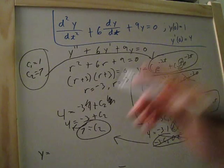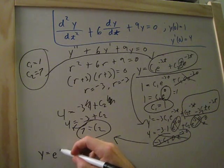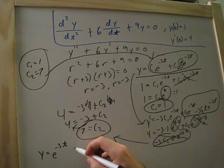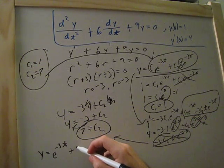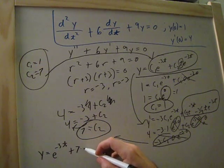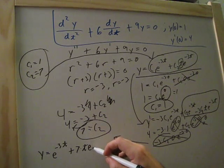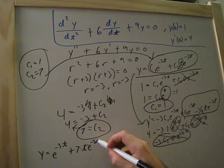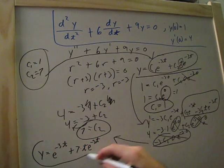So our final answer will be y is equal to 1 over here. It says it's times 1. We'll just leave that out. It will be equal to e to negative 3 times t plus 7 times t e to the negative 3t. And that right there is our answer.